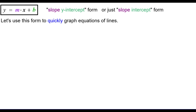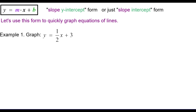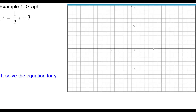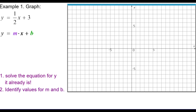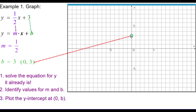Let's use slope-intercept form to quickly graph equations of lines. Example 1: graph y equals 1 half x plus 3. The equation is already solved for y. Writing y equals mx plus b beneath it, I can identify m equals positive 1 half and b equals positive 3. Third, plot the y-intercept at coordinates (0, b) — in this case (0, 3). That's one point on the line.